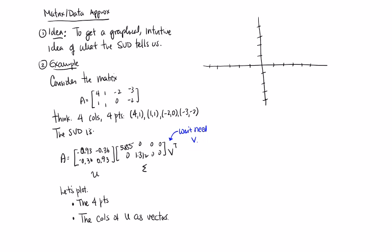So the points we get are 4, 1 right here, 1, 1, negative 2, 0, negative 3, negative 2. So those are the columns.